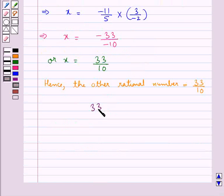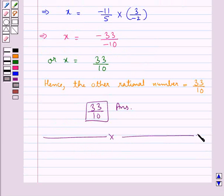33 upon 10 is our final answer. This completes the session. Hope you have understood the solution for this question. Thank you.